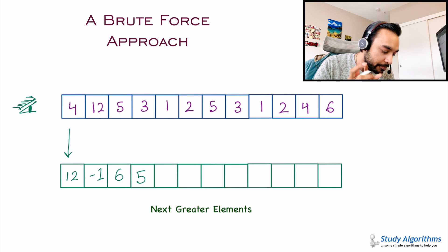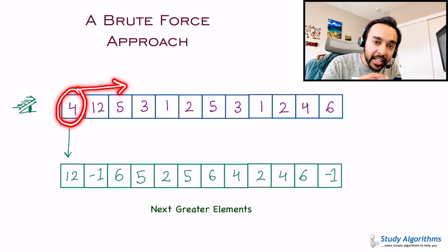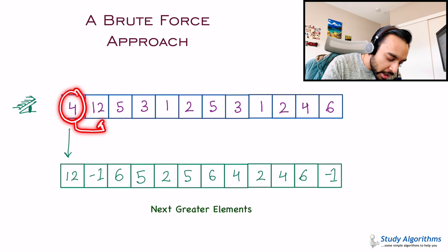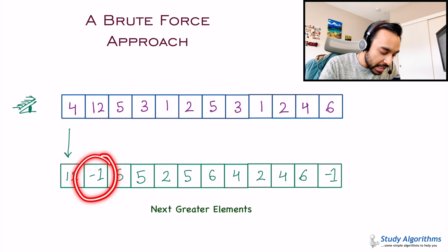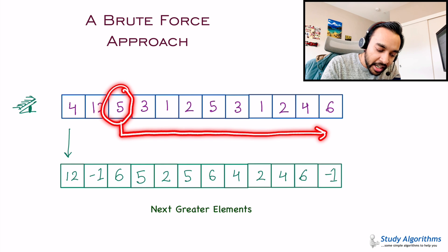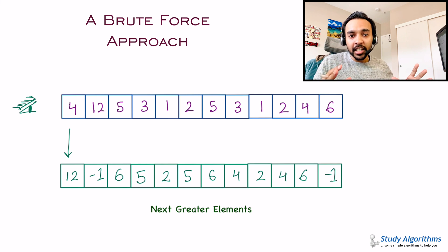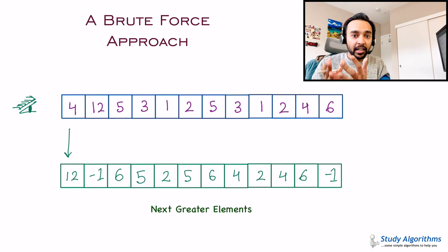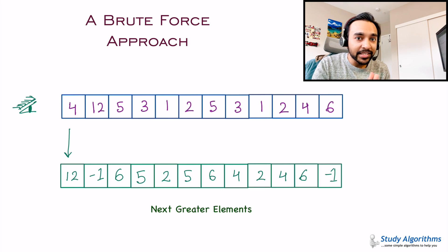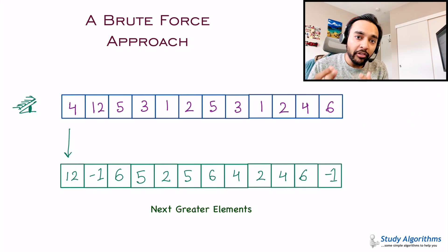This is how you can fill the entire array. The most naive approach is to start from the first element and explore the entire array until you find the next greater element. Start with 4, find 12, write 12. Start with 12, explore the entire array, don't find anything, enter minus 1. Start with 5, explore the array, find 6. This works, but the problem is you have to iterate through the entire array again and again, so this solution is not optimized. If you submit a brute force solution on LeetCode it will be accepted since this is an easy problem, but if the array is very large this approach will be very time consuming.